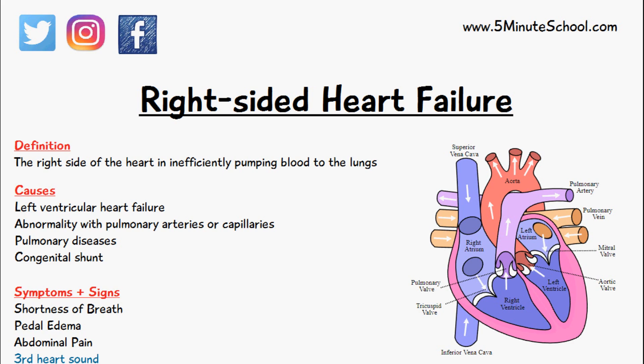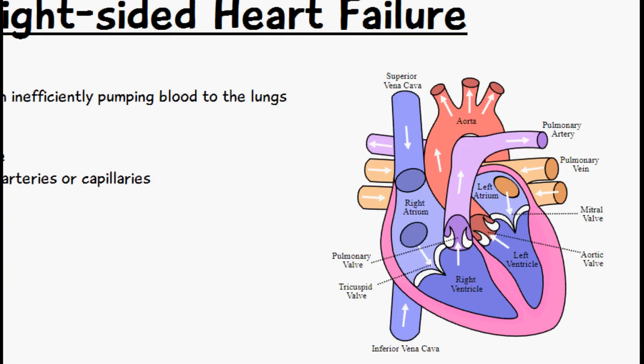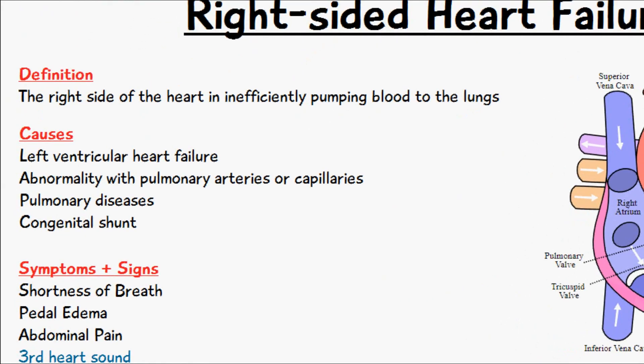With right-sided heart failure, the right side of the heart is inefficiently pumping blood to the lungs. There are several reasons why this can happen, but the overall cause is that there is an inappropriate load or pressure applied onto the right ventricle, or the muscle cells — the myocytes — of the right ventricle lose their contractility.